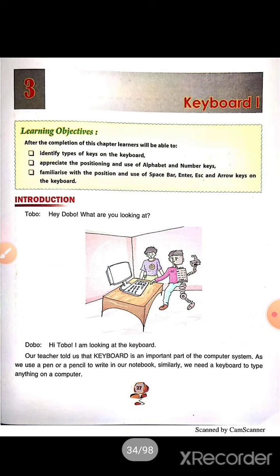As we use a pen or a pencil to write in our notebook, similarly, we need a keyboard to type anything on a computer. Keyboard is a device like a typewriter, and keyboard is an input device. With the help of a keyboard, we can type alphabets, numbers, and symbols also.